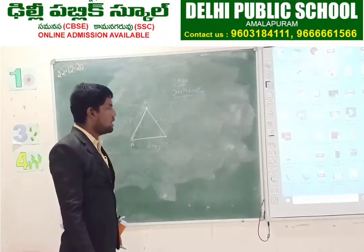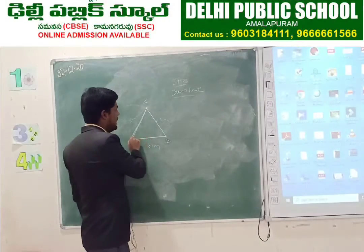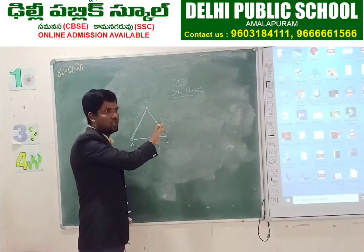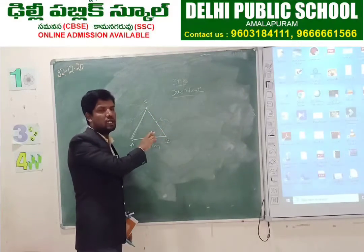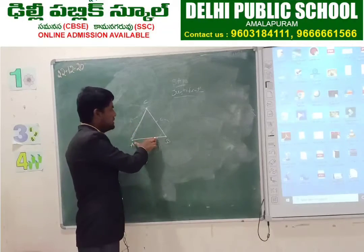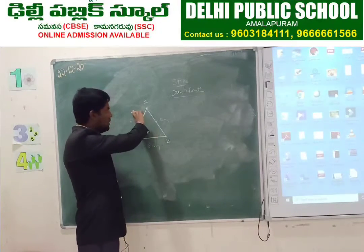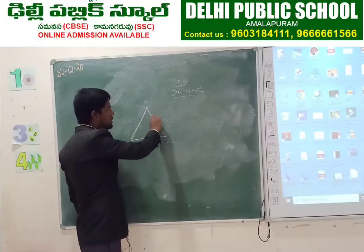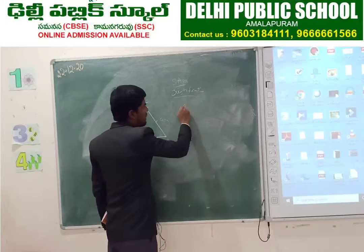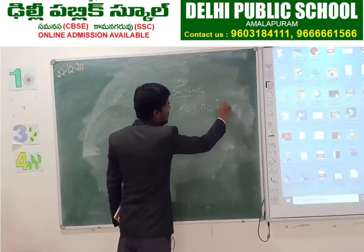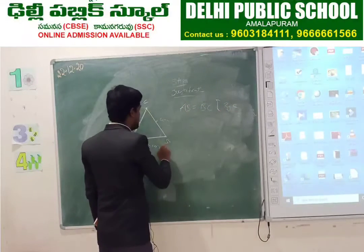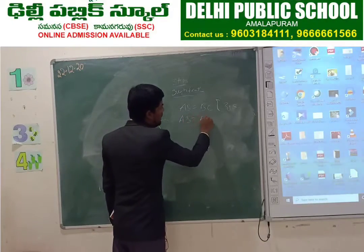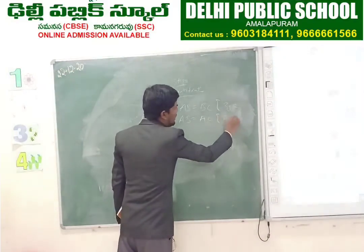Now, justification. With the construction, AB is equal to BC — we drew arcs with the same measurement: from A we drew one arc, and from B we drew one more arc. So AB is equal to BC by construction. Similarly, AB is equal to AC, also by construction.